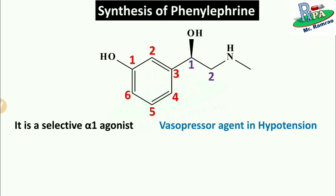Phenylephrine is used as a vasopressor agent in hypotension, where we require to increase blood pressure. Vasopressor agents increase blood pressure by vasoconstriction. Another important use of phenylephrine is as a nasal decongestant, applied to nasal passages to reduce congestion and discomfort due to allergies and the common cold. Phenylephrine causes blood vessels in the nasal passages to shrink — that means vasoconstrict — thereby relieving nasal congestion.